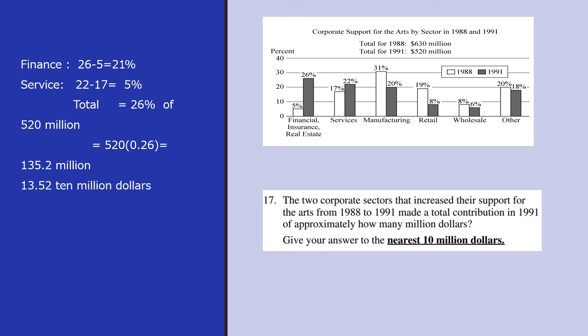And these things are all out of 520 million. So when you calculate this out of 520 million, you get that as 135.2 million. Since you have to give the correction to 10 million dollars, your answer is 13.52 or we can even say 14, 10 million dollars.